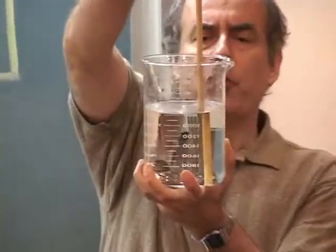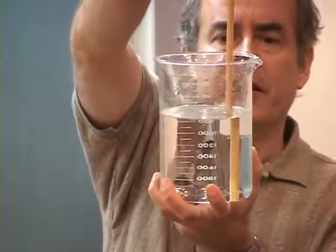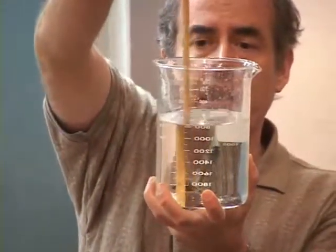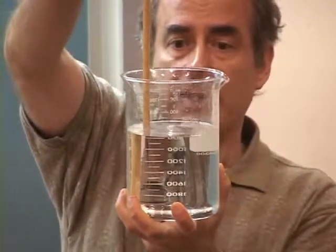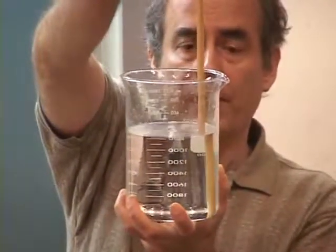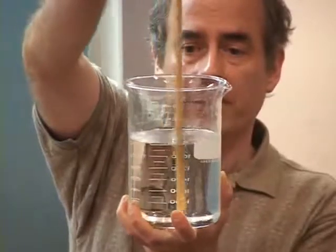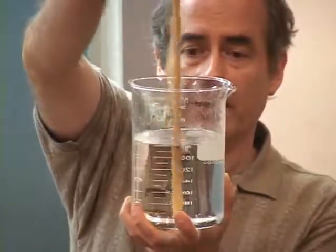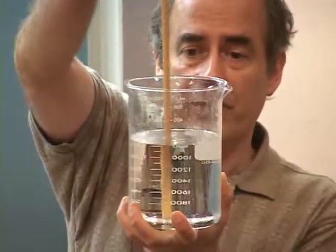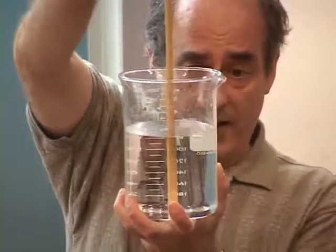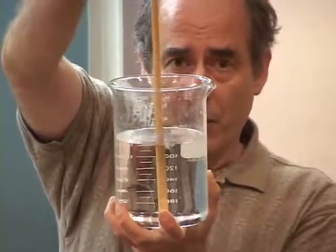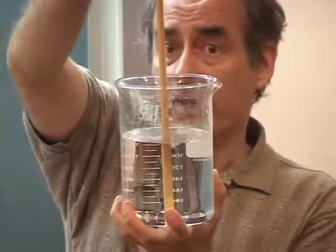The dowel under the water appears shifted to the right. If we move to the other side, it shifts then to the left. In each case, toward the edge of the beaker. You may also notice that the appearance of the dowel below the water is a little magnified.